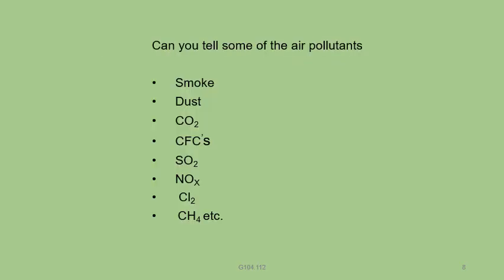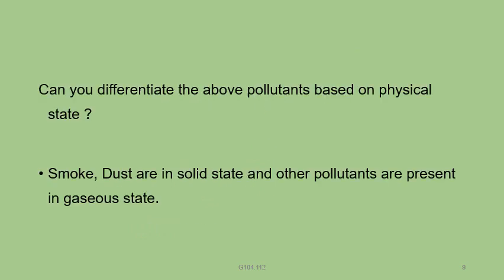Can you name some air pollutants? Generally, smoke is an air pollutant, as is dust, CO2, CFCs (chlorofluorocarbons), sulfur oxides, nitrogen oxides, chlorine, and methane. Based on physical state, smoke and dust are in solid state while nitrogen oxide, sulfur oxide, chlorine, and methane are all in gaseous state.